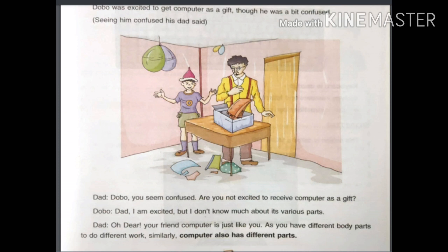Dobo was excited to get a computer as a gift, though he was a bit confused. Dad asked: 'Dobo, you seem confused. Are you not excited to receive a computer as a gift?' Dobo replied: 'Dad, I am excited, but I don't know much about its various parts.' Dad said: 'Your friend computer is just like you — as you have different body parts to do different work, similarly a computer also has different parts.' His father is going to explain the different parts of the computer.